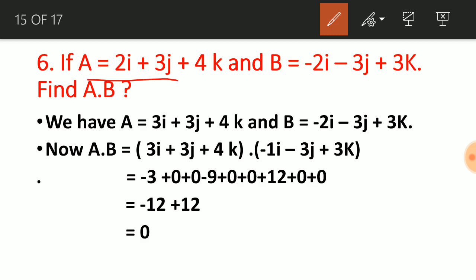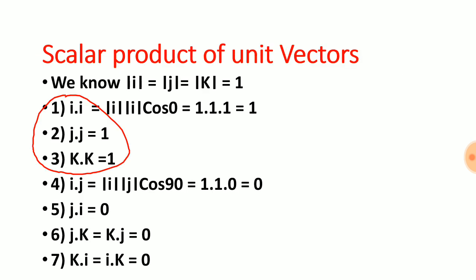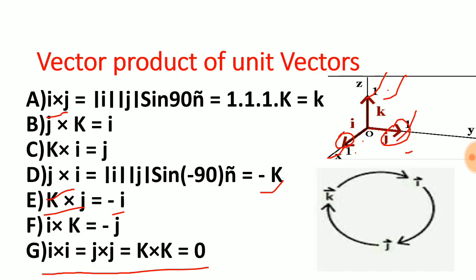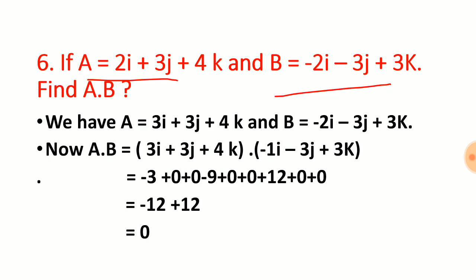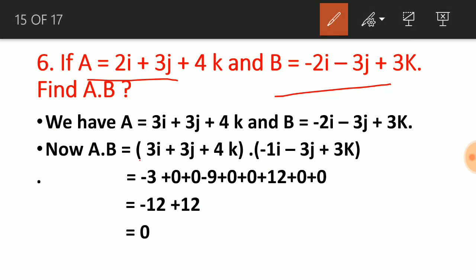Now let us see a worked example. If vector A and vector B are given, we need to find A·B. Using the rules i·i = 1, j·j = 1, i·j = 0, and so on, we multiply the corresponding components. Only same-axis terms survive; for example 3i·1i gives a contribution, 3j·(−3) gives another, and 4k·3k gives another. In this case the dot product works out to zero — which tells us the angle between A and B is 90°.